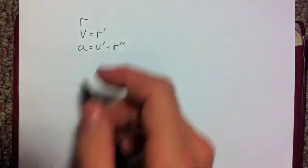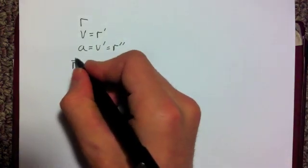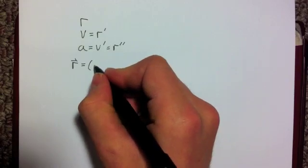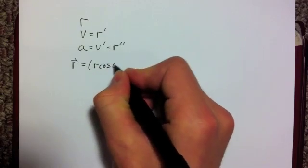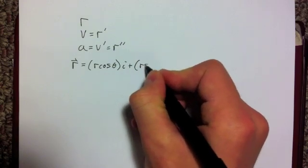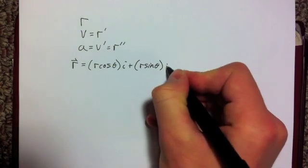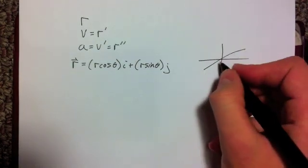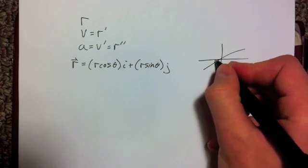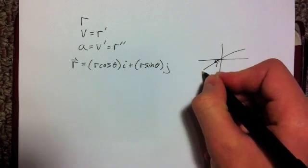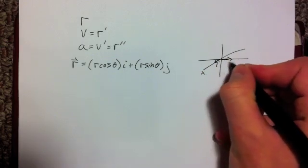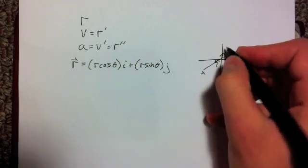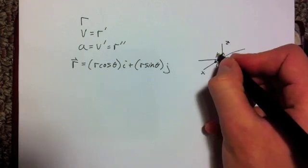It's useful in this proof to describe the position in polar coordinates. That is, the vector r equals r cos θ in the i-hat direction, plus r sin θ in the j-hat direction. The i-hat direction is along the x-axis, the j-hat direction is along the y-axis, and the direction along the z-axis is known as k-hat.